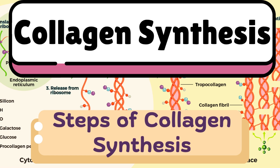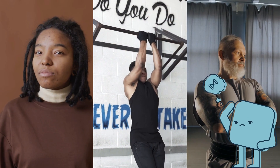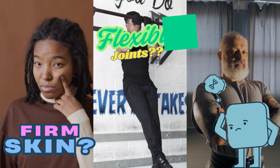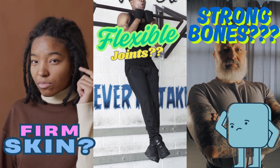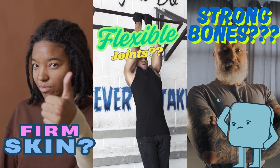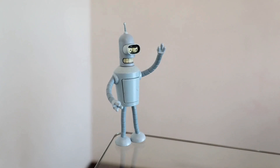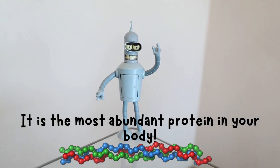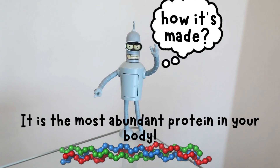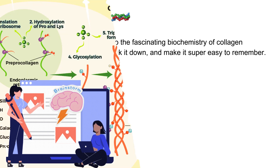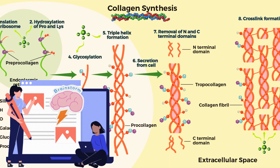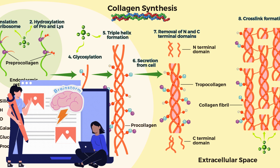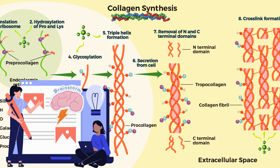Steps of synthesis of collagen. Ever wondered what keeps your skin firm, your joints flexible, and your bones strong? The answer is collagen. It is the most abundant protein in your body. But have you ever thought about how collagen is made? In this video, we're diving deep into the biochemistry of collagen synthesis, breaking it down step by step to make it easy to understand. Let's get started.